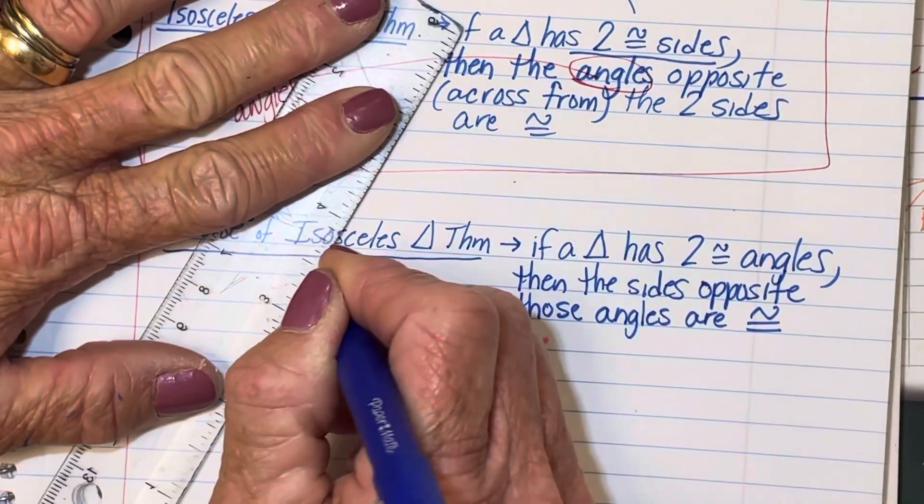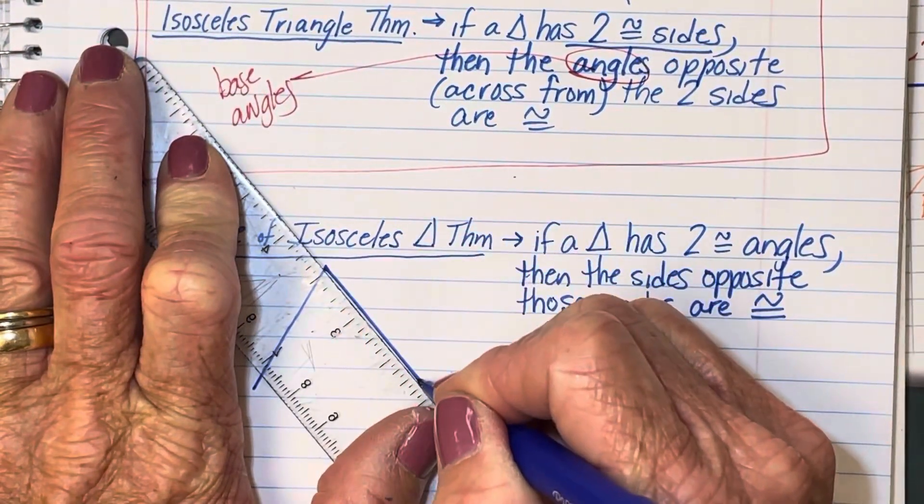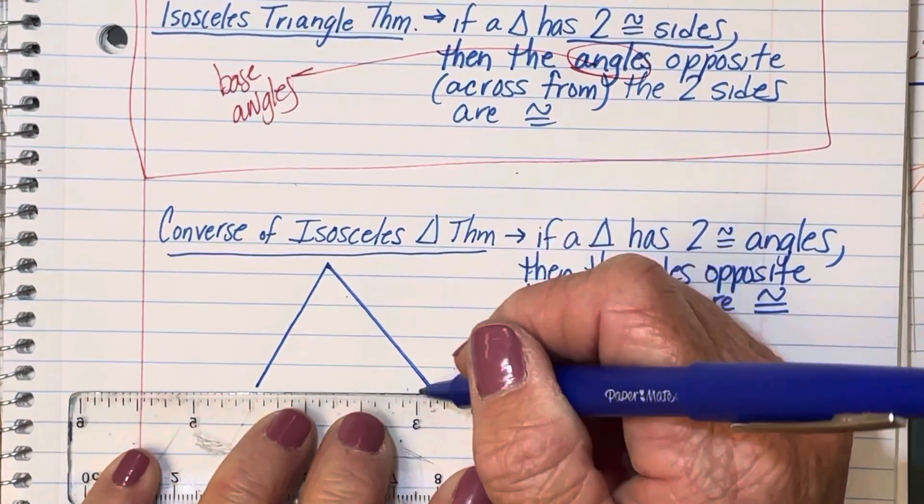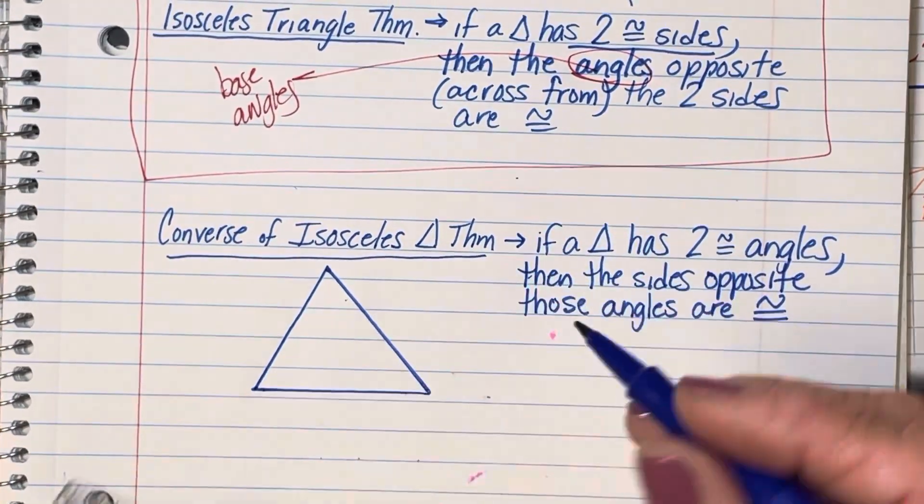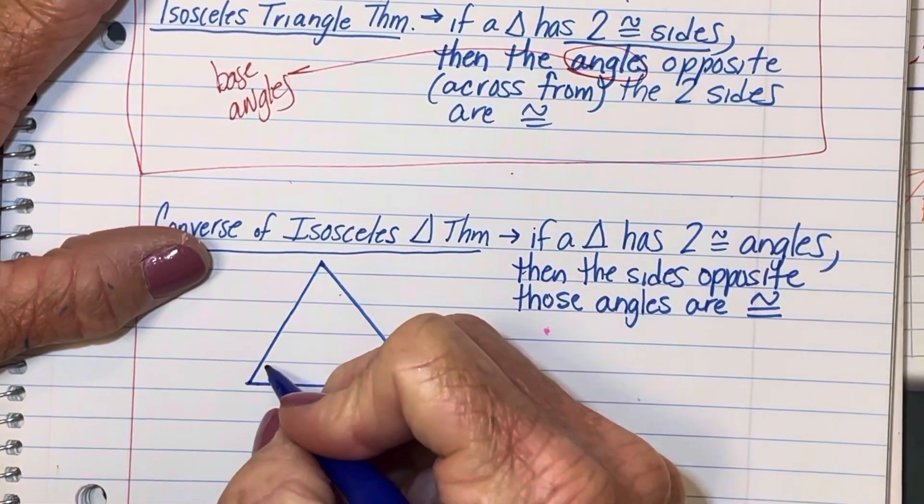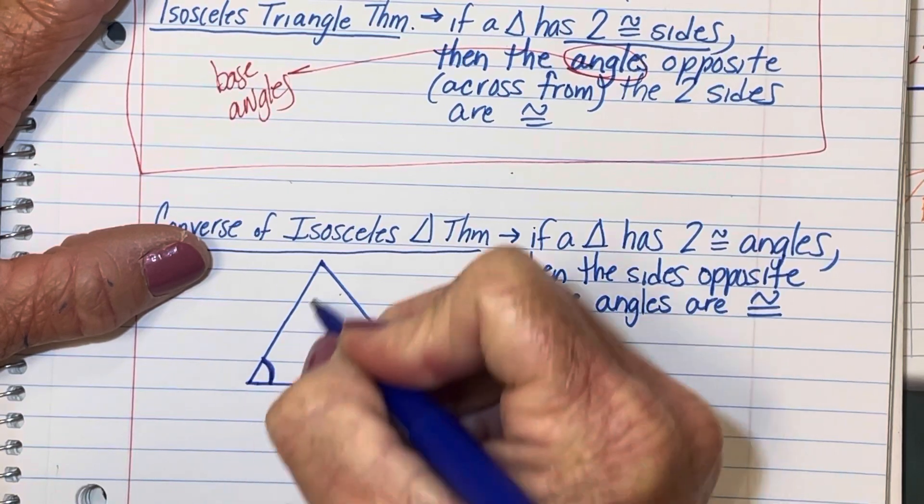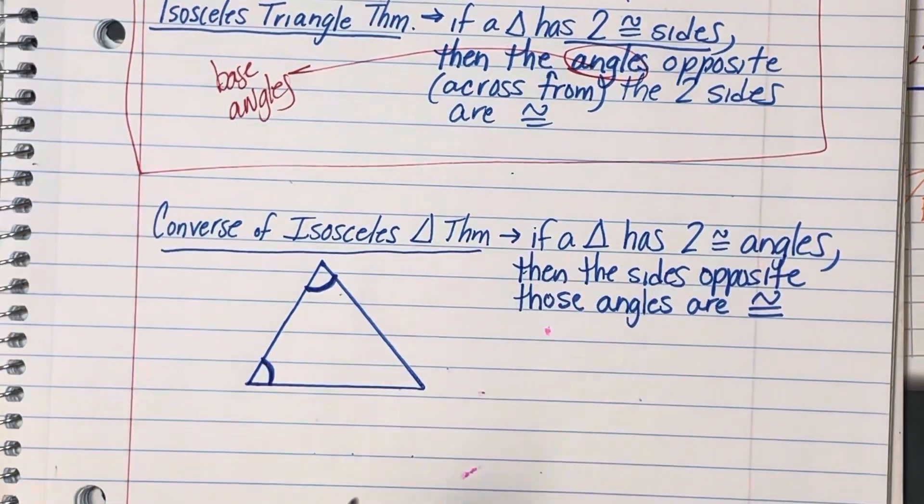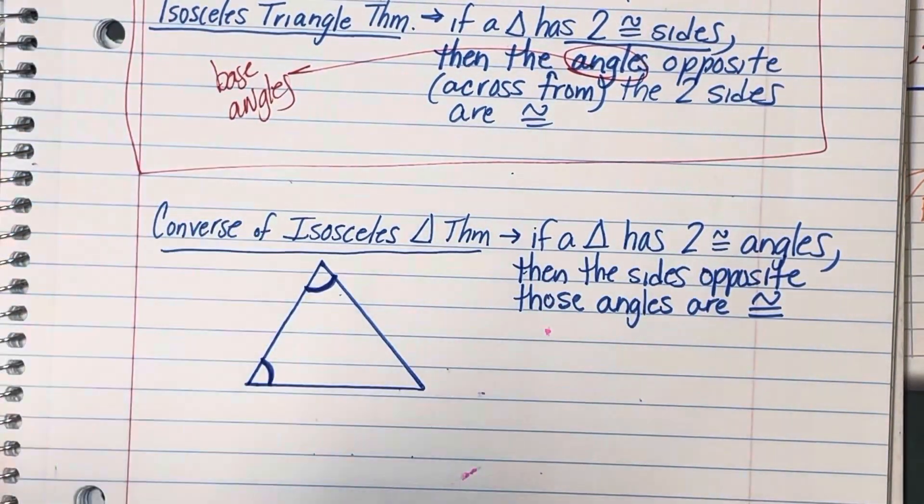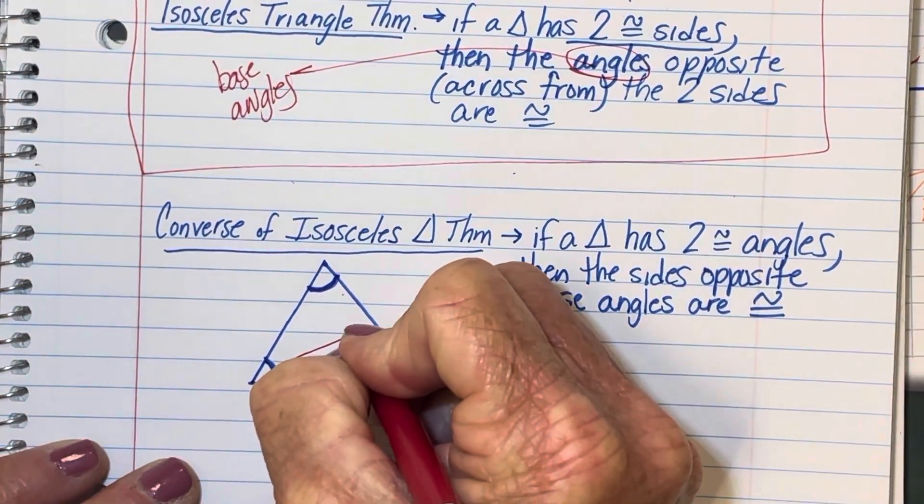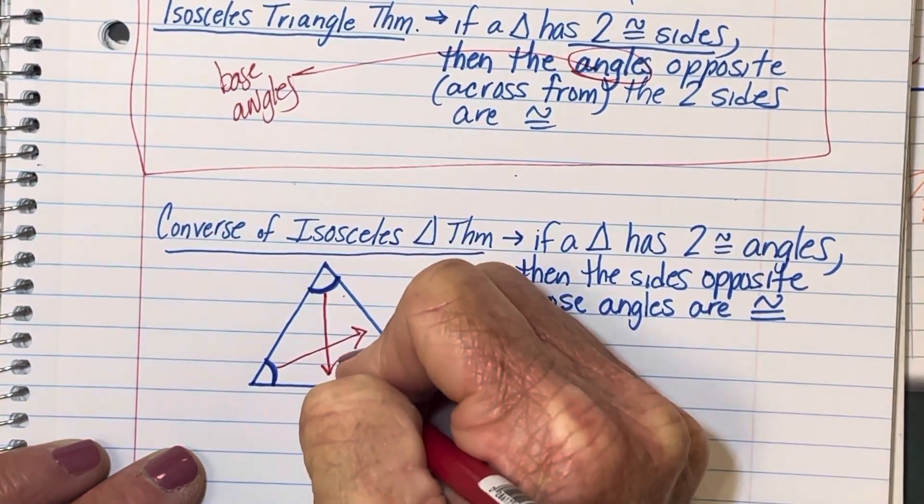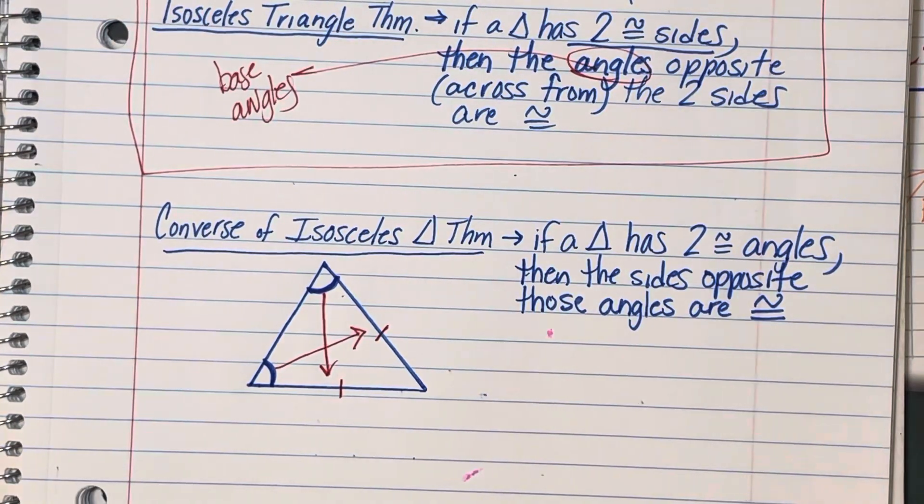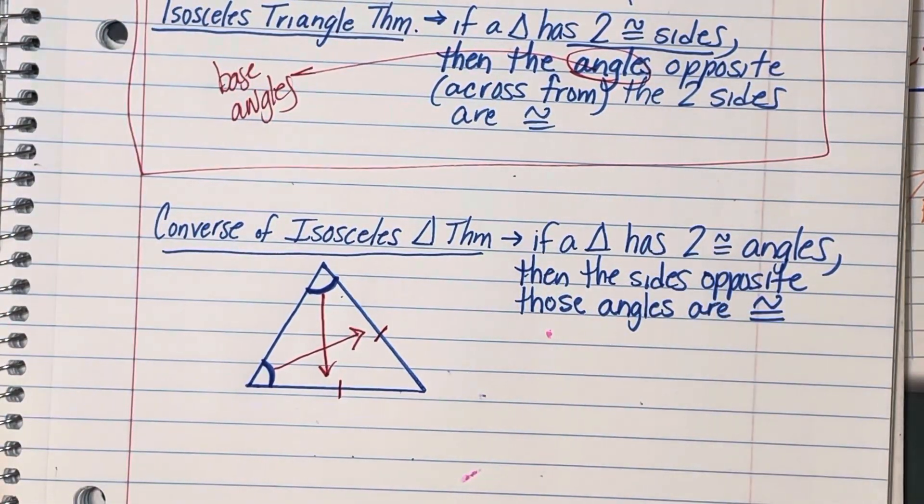and we know that, I'm going to do these angles this time, we know that these two angles are congruent to each other, then according to this theorem, then we can go this way,